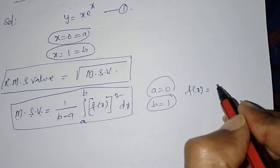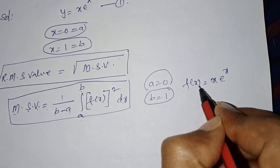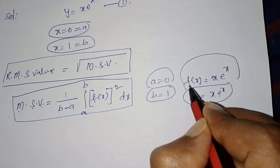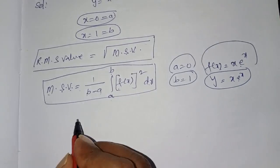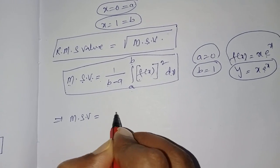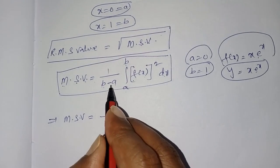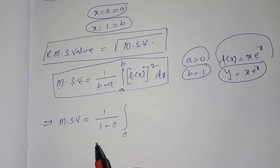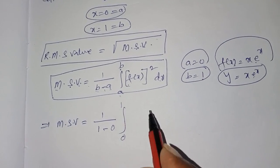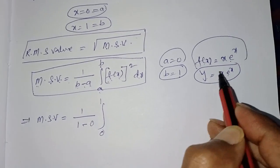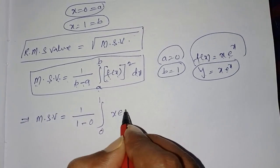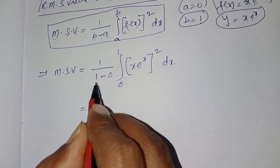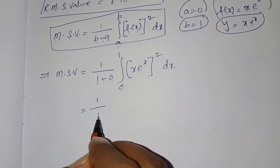Here f(x) = x·eˣ. Now substitute the values into the formula: MSV = (1/(b−a)) · ∫[a to b] [f(x)]² dx. With b = 1 and a = 0, this becomes MSV = (1/(1−0)) · ∫[0 to 1] (x·eˣ)² dx.